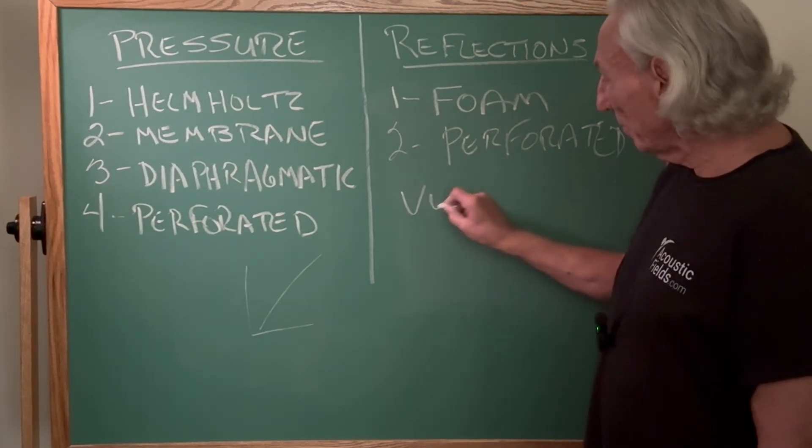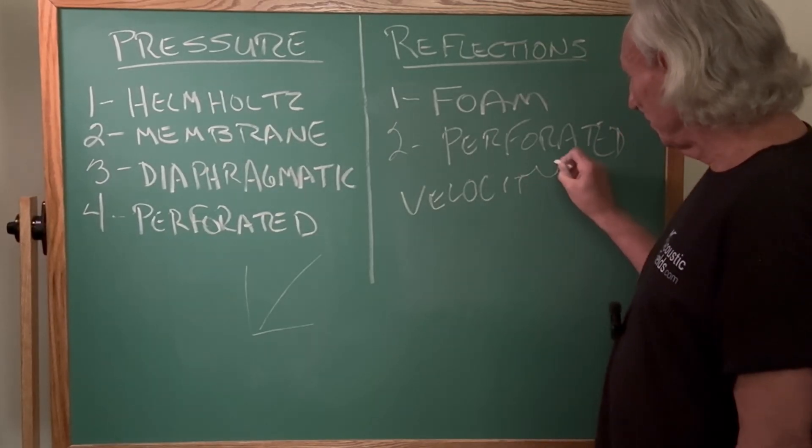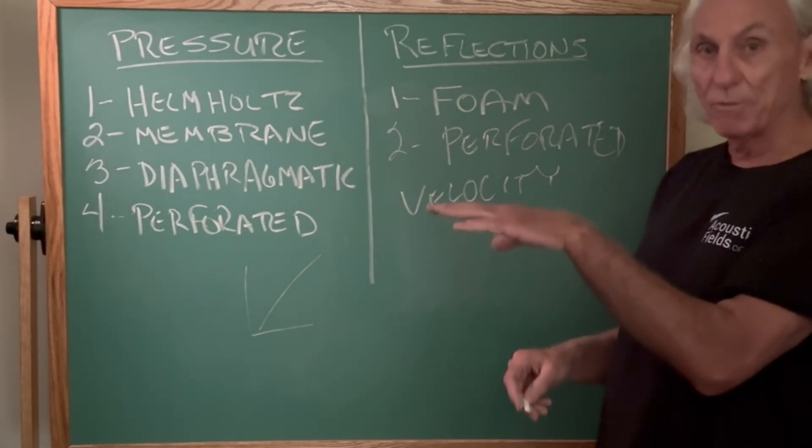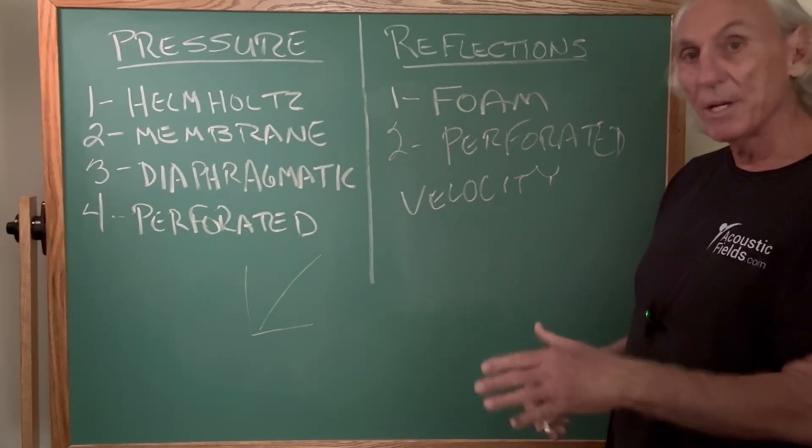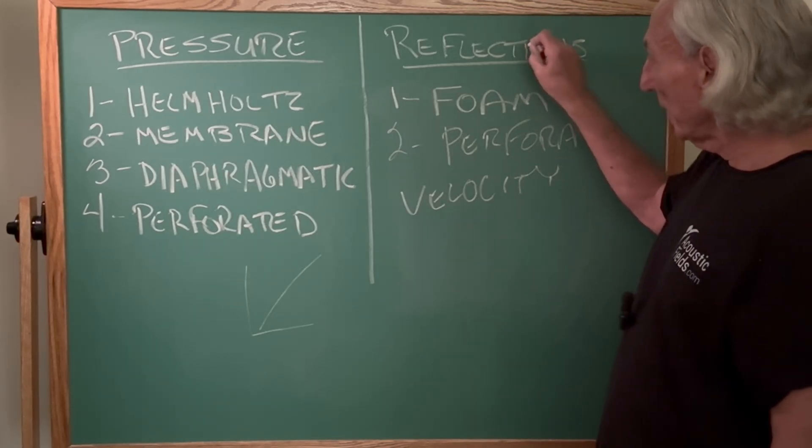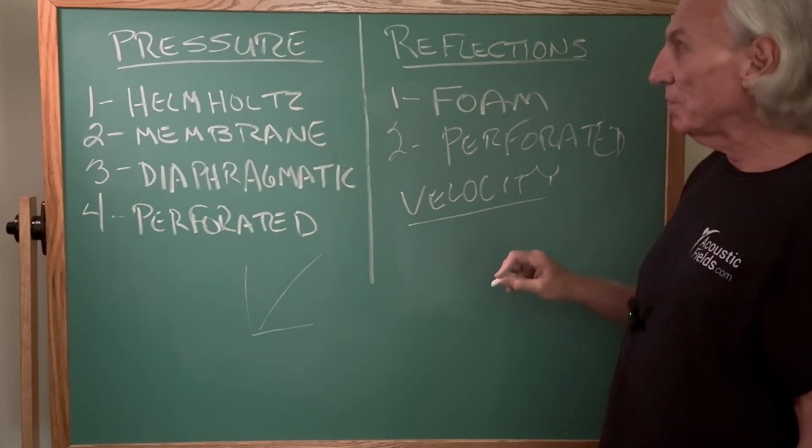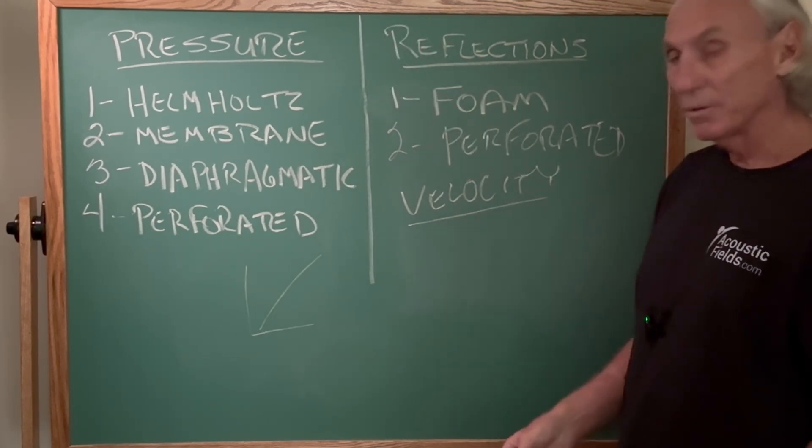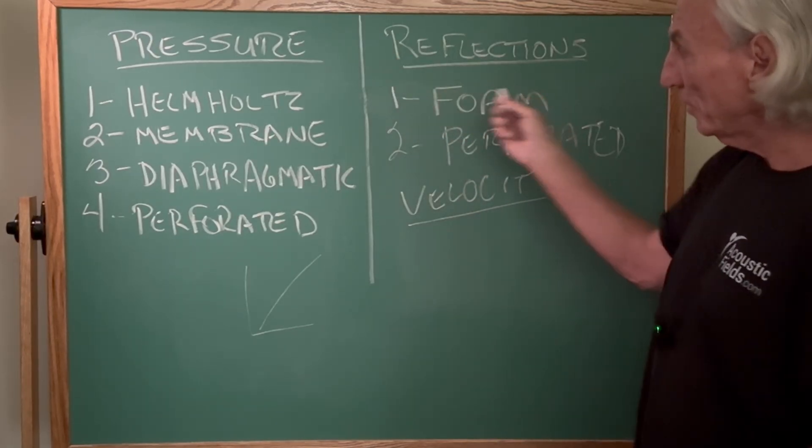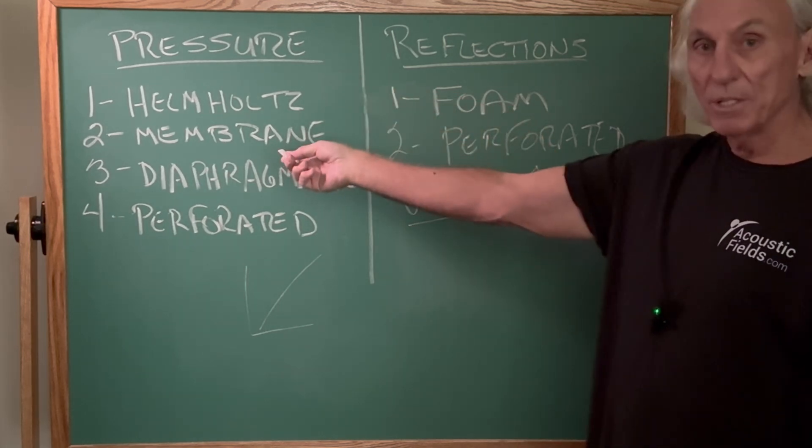Open cell foam works on something called velocity, that's airflow. So air moving over the surface creates friction, energy transformation to heat, we get absorption. So you could think of reflections, middle and high issues, as using velocity treatment, and pressure of course using those four types there.